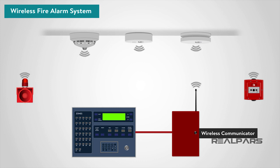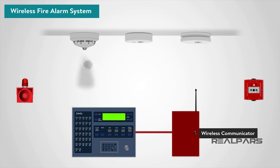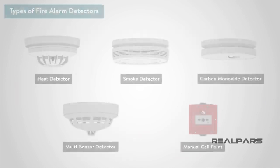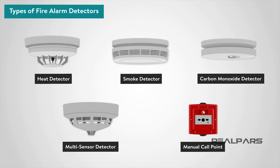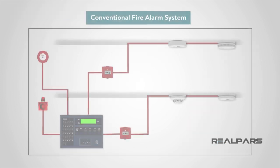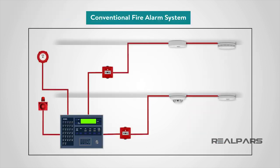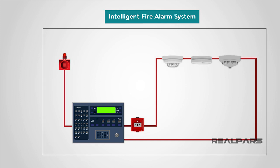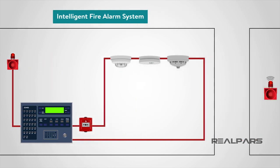In this video, we have learned that fire alarm systems are fitted in many buildings we encounter every day, and that they are used to warn people within the building of an emergency fire-related situation. We discussed the main types of detectors: heat detectors, smoke detectors, carbon monoxide detectors, multi-sensor detectors, and manual call points. And finally, we looked at the different types of fire alarm systems: conventional, addressable, intelligent fire systems, and wireless systems.